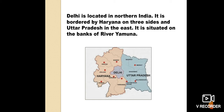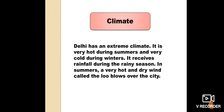Delhi has an extreme climate — it is very hot during summers and very cold during winters. It receives rainfall during the rainy season. In summer, a very hot and dry wind called the 'loo' blows over the city, giving you an idea of just how hot it gets during summer.